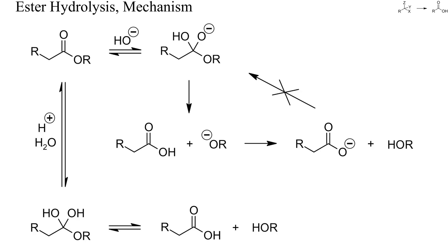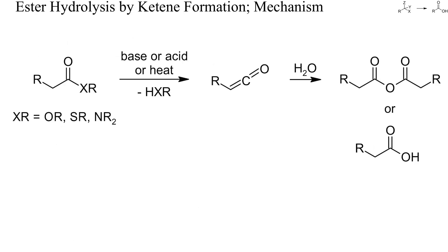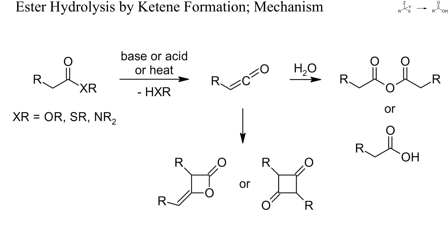Esters of tertiary or benzylic alcohols can also be cleaved by acids through carbocation formation. Thermal or catalyzed hydrolysis of acid derivatives can also proceed by intermediate ketene formation. Upon reaction with water, ketenes will yield carboxylic acids. Anhydrides are obtained if less than one equivalent of water is used. Ketenes are not stable and tend to dimerize to beta-lactones or cyclobutadiones if no nucleophile is available.